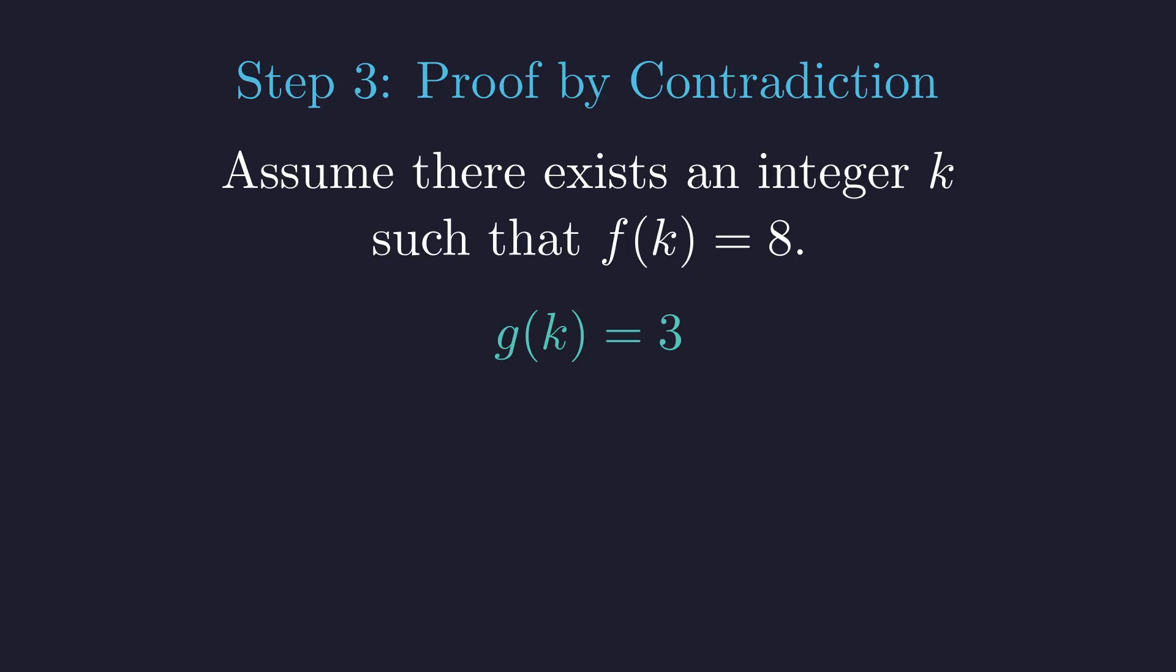But remember how we factored g? We can substitute that factored form here. This gives us a really interesting equation. We have k minus a times k minus b times k minus c times k minus d times h of k, all equal to 3.